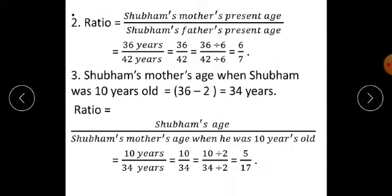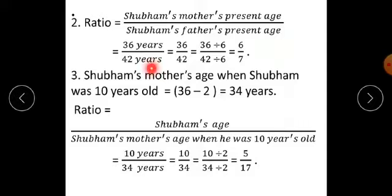Second ratio: ratio of Shubham's mother's present age upon Shubham's father's present age = 36 years upon 42 years. Years cancel. Therefore, 36 upon 42. Both are completely divisible by 6. Therefore, 36 divided by 6 upon 42 divided by 6 = 6 upon 7.